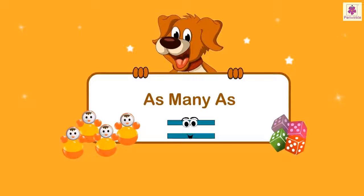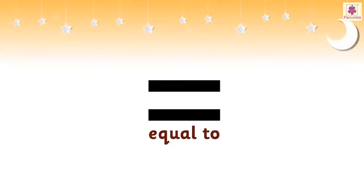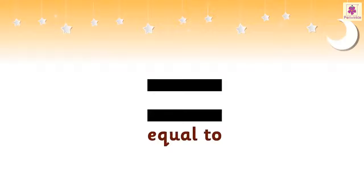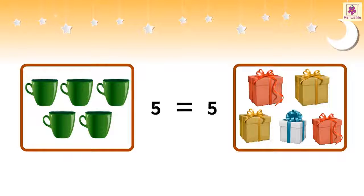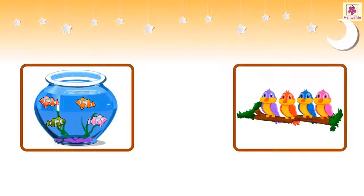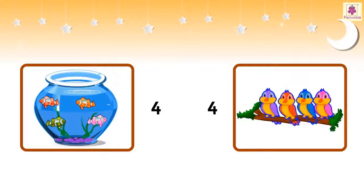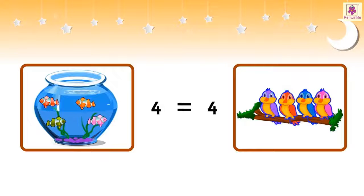Let us look at the symbol used if the number of objects in both the groups is equal. Look at the two groups — if you count them, you will find that there are four fish and four birds. That is, the number of fish is equal to the number of birds.